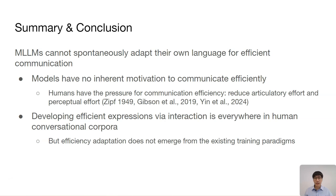In summary, we propose ICA as an evaluation framework for any generic MLLM conversational agents. We showed that today's MLLMs cannot spontaneously adapt their own language to be more efficient through interactions, though when acting only as the listener and under certain interaction formats, they can perform better as the interaction progresses. This issue is fundamental because these models have no inherent motivation to communicate efficiently, unlike humans who are naturally motivated to reduce the efforts needed in communication. This issue is still surprising, given that MLLMs have successfully displayed many other human behaviors by learning from large amounts of human data, and we know that this adaptation for efficiency is everywhere in human conversational corpora. Therefore, these models' pre-training or instruction tuning have failed to address these needs for conversational adaptation, and we hope that our evaluation framework can motivate and facilitate future research in this direction.